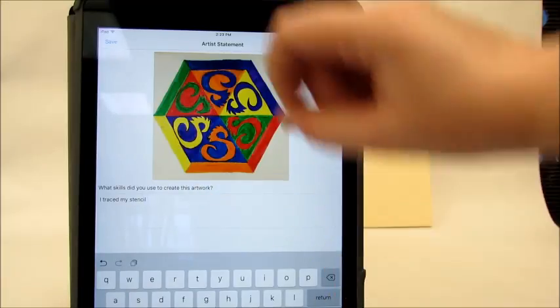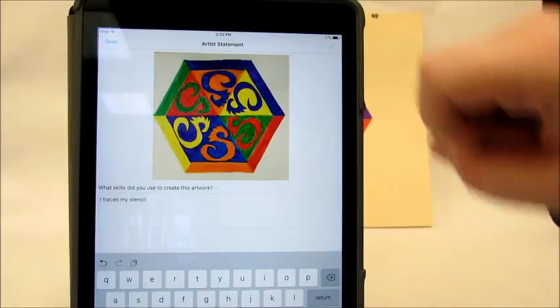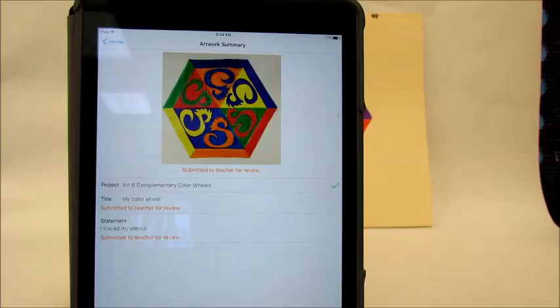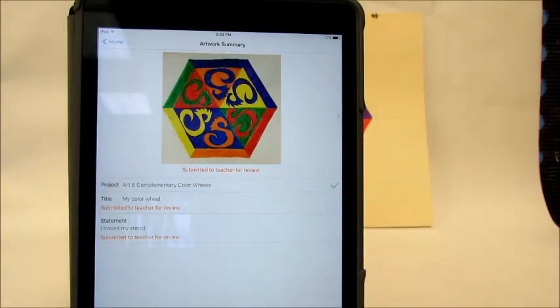If I wasn't finished and I wanted to come back to it there's a save button right up over here. But I'm done so click submit. And now your artwork is submitted to me. It'll say submitted to teacher for review so everything that you put on here I have to approve before it goes online so we don't have any inappropriate comments written or pictures that don't look quite as good as they could.